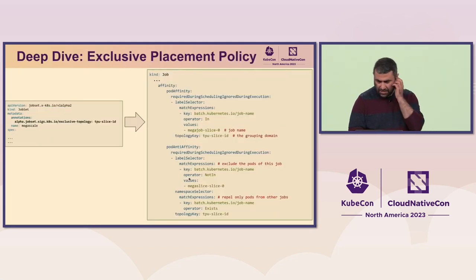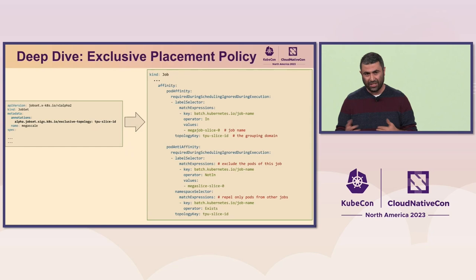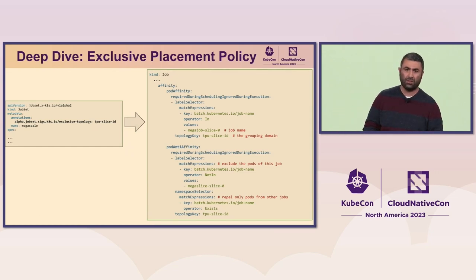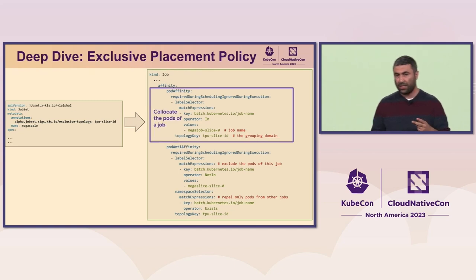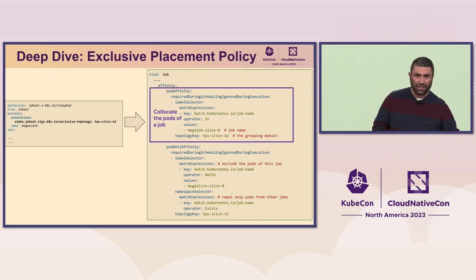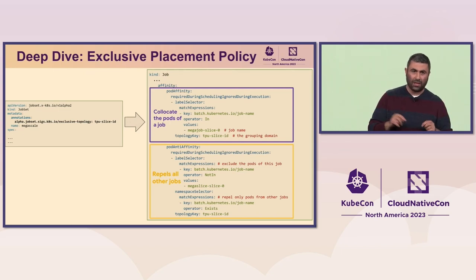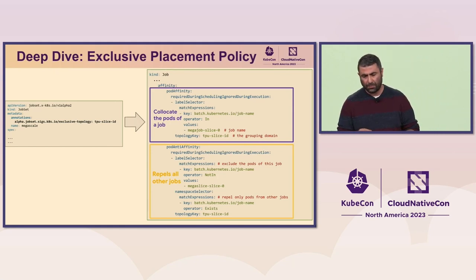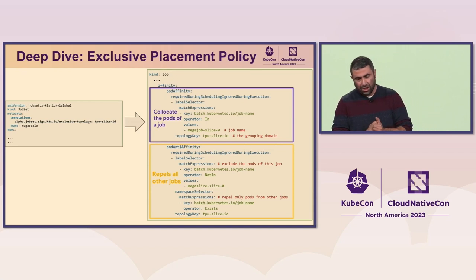How we implemented this is interesting — using just pod affinity and anti-affinity. We didn't integrate a new scheduler into the JobSet operator. What we did was inject two scheduling constraints: a pod affinity constraint that ensures all the pods of a job land on the same slice, and an anti-affinity constraint to ensure that no other pod lands on the same slice, avoiding race conditions. This combination of pod affinity and anti-affinity allows us to implement exclusive placement.